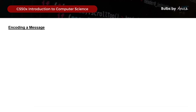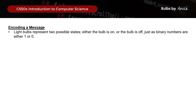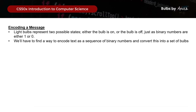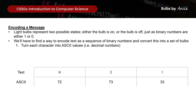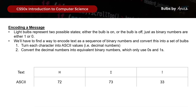With the background of binary in place, light bulbs represent two possible states - either the bulb is switched on or off, similar to how binary numbers can only be 0 or 1. In this problem set, we want to encode text as a sequence of binary numbers and convert this into a set of bulbs. Taking 'hi!' as an example, we need to turn each character into ASCII values, then convert those decimal numbers into their respective binary numbers using only 0s and 1s, where each decimal is represented by 8 bits.